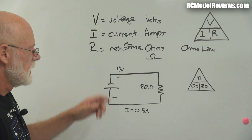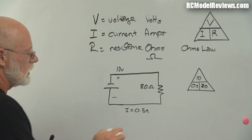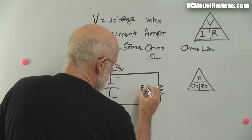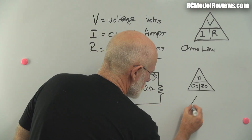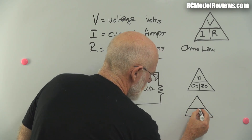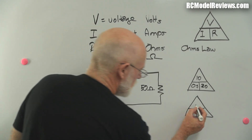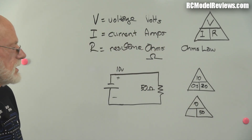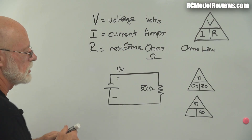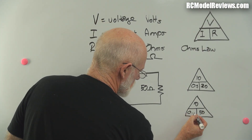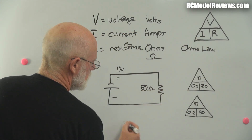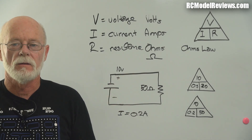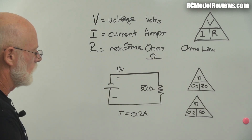You might be thinking: why would I ever want to calculate that? But there are other scenarios too. Let's say we put in a 50-ohm resistor. Using the triangle again with 10 volts and 50 ohms: 10 divided by 50 equals 0.2. So the current I equals 0.2 amps. If we know any two of these figures, we can work out the third one by simply substituting values into the Ohm's Law triangle.